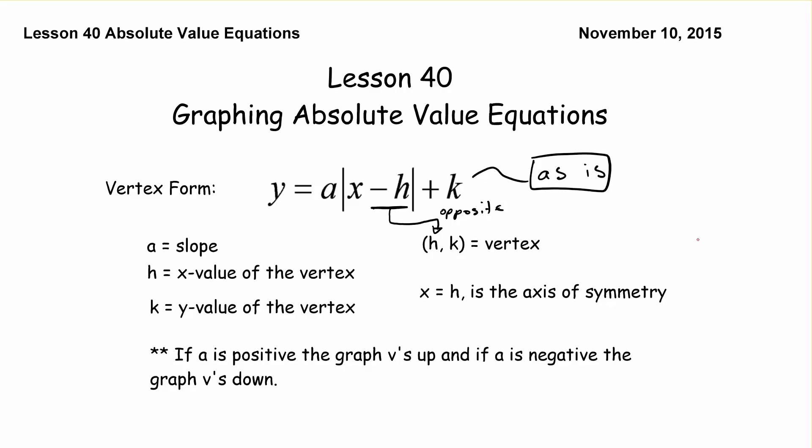If a is positive the graph v's up, it would look like this. And if our a value is positive then it v's up. And if our a value is negative then we v down. And we'll talk about that here as we go.